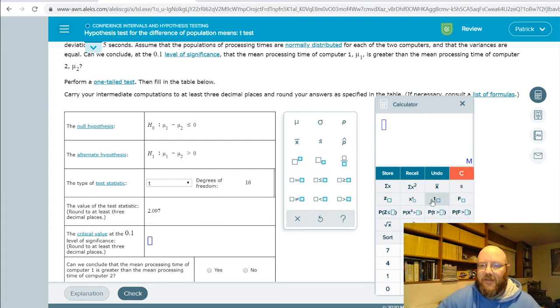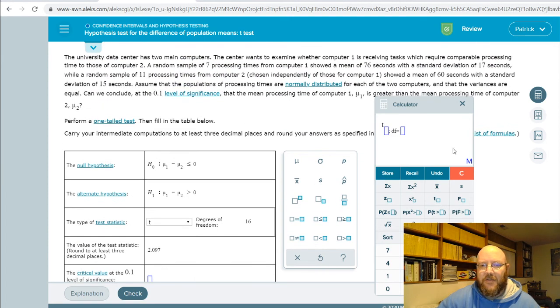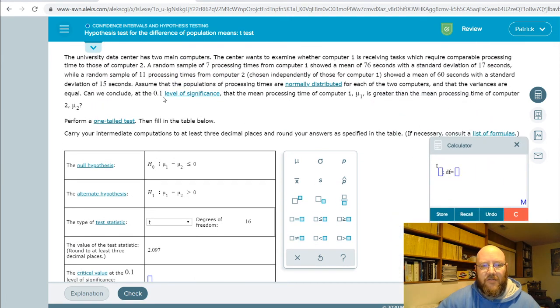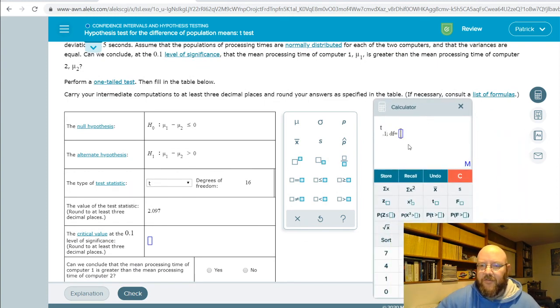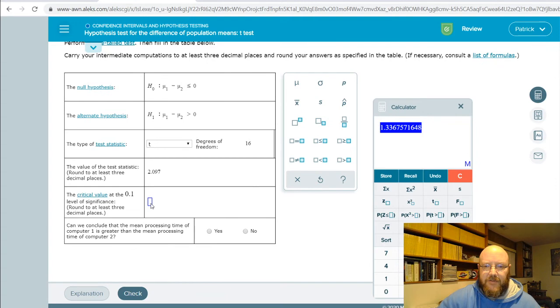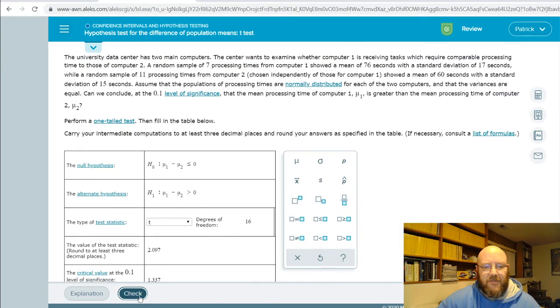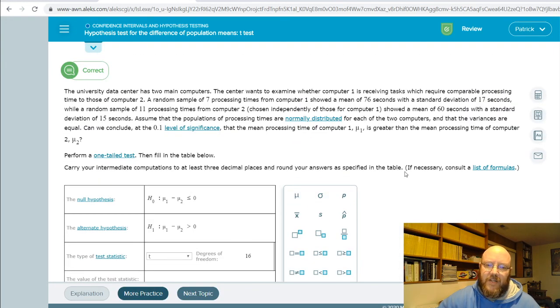Critical value on this one, no different than the other t-tests that we've done. Just take a table lookup using our level of significance, .01. This one's greater than, so .01, and degrees of freedom on this one is 16. So just pull that right off your calculation right here. There you go. There's our critical value, which is 2.583. And can we conclude that the mean processing time of computer one is greater than the mean of two? This is much higher than this, so yes. Yes, we can do that. So let's go ahead and give that a check. Got it right. Somehow, we managed to get that one right.